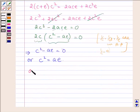Or we can say that C upon A is equal to E upon C, or we have A, C, E are in GP.